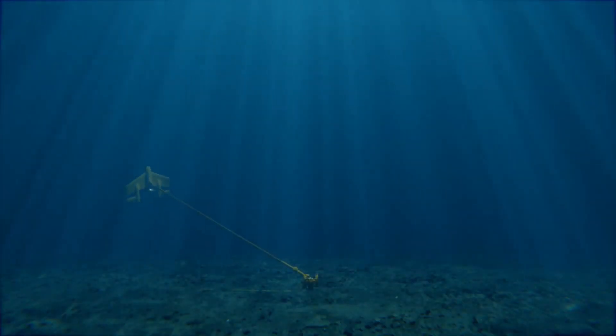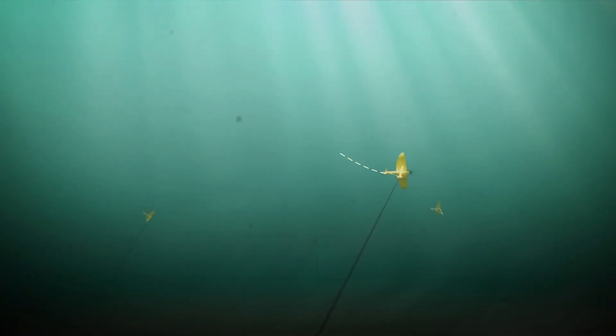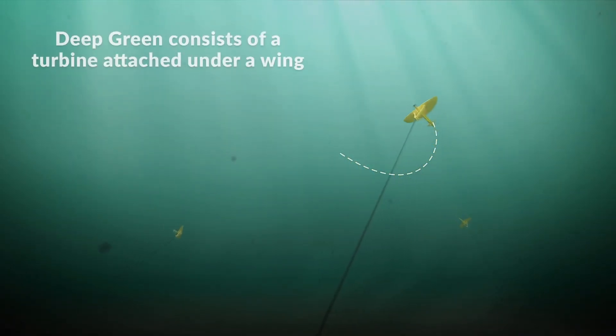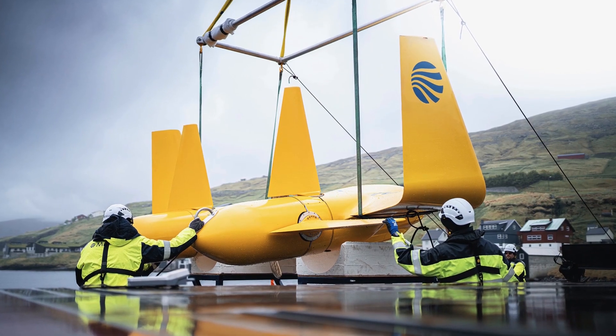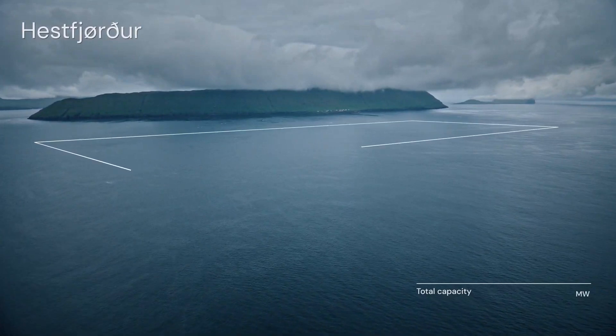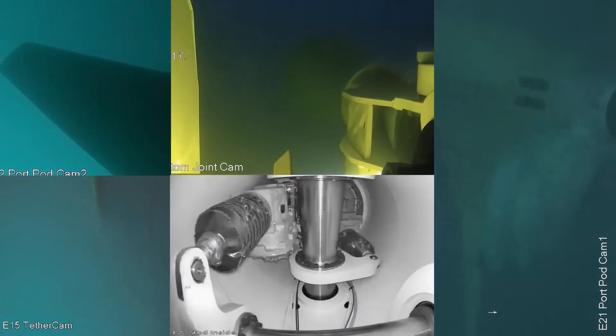The kite is connected to a foundation on the seafloor by a strong, flexible tether, allowing it to move freely in its trajectory while remaining anchored. As the kite moves, it drives a turbine which in turn powers a generator to produce electricity.